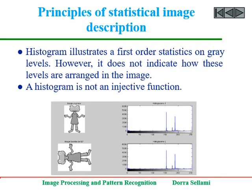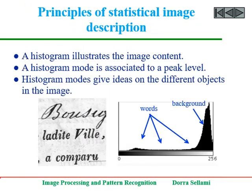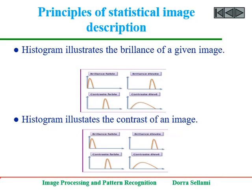A histogram illustrates first-order statistics on grey levels. However, it does not indicate how these levels are arranged in the image, and a histogram is not an injective function. From a histogram, we can read the dynamic range of an image, which is the maximum value minus the minimum value. A histogram illustrates the image content — a histogram mode is associated to a peak level, and histogram modes give ideas on the different objects in the image. A histogram also illustrates the brilliance and contrast of a given image.